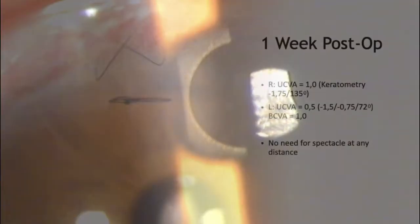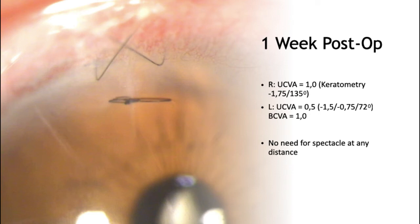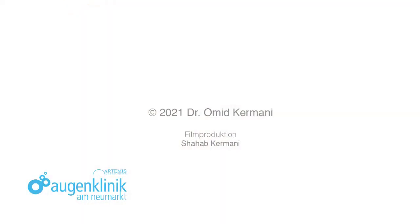Both eyes were operated within the same week. The fellow eye with plus 6 diopters refraction received a monofocal IOL of plus 33 diopters. Uncorrected visual acuity of the right eye with the small aperture IOL was 1.0 despite corneal astigmatism of 1.75 diopters. The left eye turned out to be more myopic than planned, but best corrected visual acuity was 1.0 as well. In summary, the result was very satisfying for the patient, with the blended monovision outcome enabling her to see at all distances without the need for spectacles. Photophobia was much less bothersome and both eyes worked very well together.